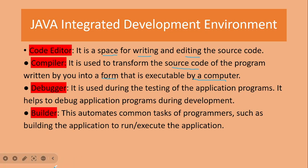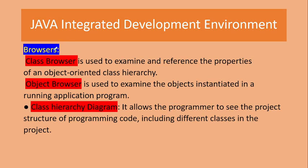Next feature is the browser. There are two kinds of browsers: the class browser and the object browser. The class browser is used to examine and reference the properties of an object-oriented class hierarchy. It is also used to examine the objects instantiated in a running application program.